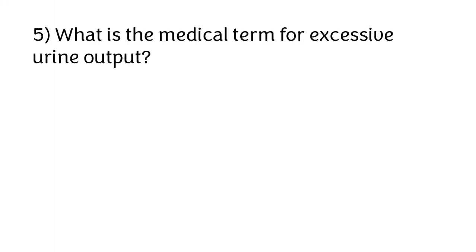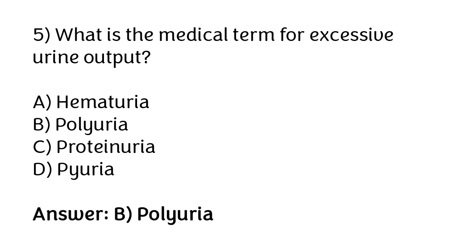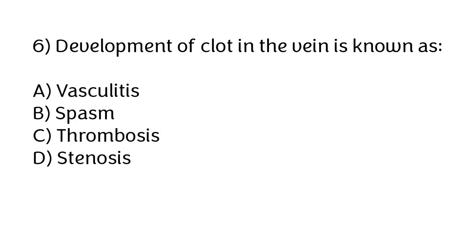What is the medical term for excessive urine output? Options: hematuria, polyuria, proteinuria, dysuria. The correct answer is option B — polyuria is the medical term for excessive urine output.